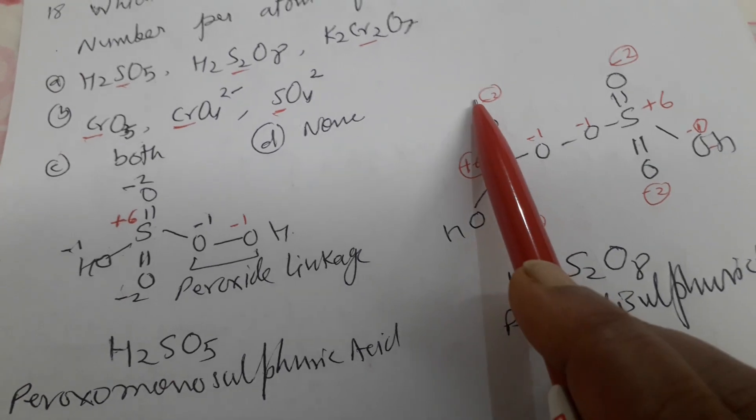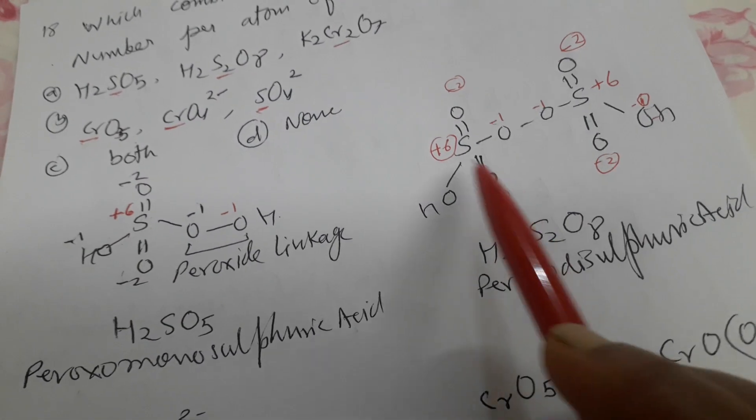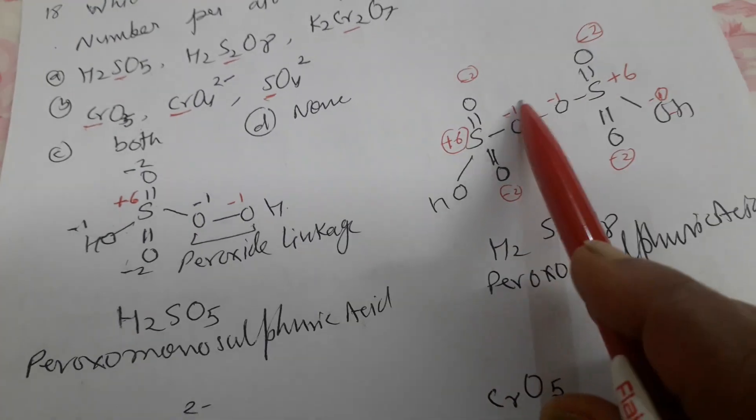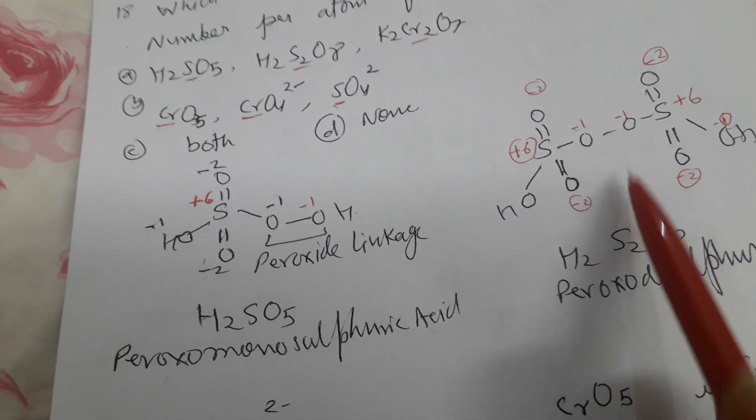Sulfur which is bonded with double bond, here oxygen is 2 negative. Here also 2 negative and OH 1 negative. Peroxide linkage is always having minus 1 oxidation number.